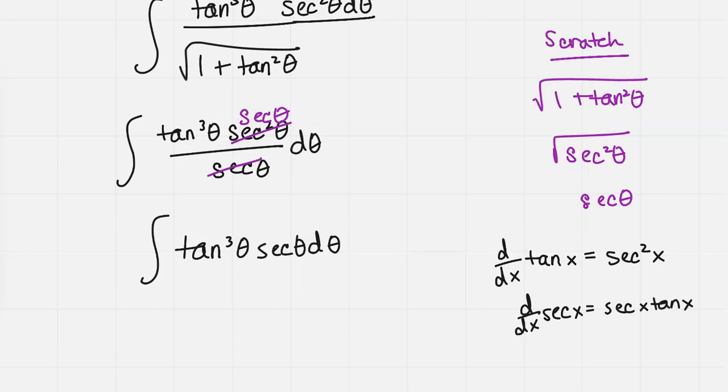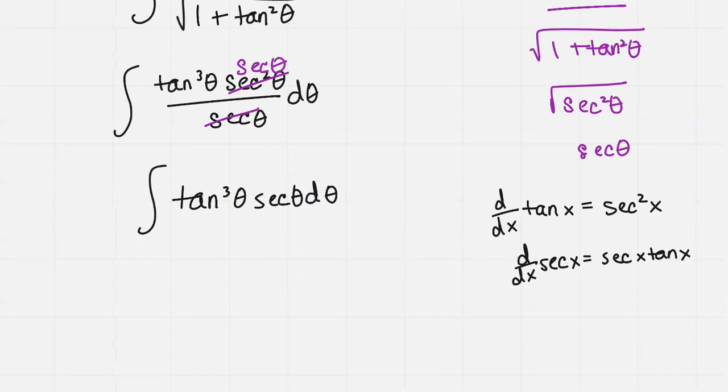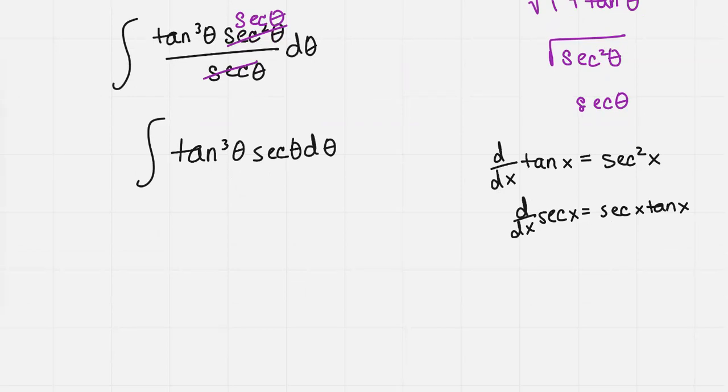When I originally played around with this, I thought, let's get something with a secant squared x and see where we can go. So that tan cubed x, I can separate out into tan squared x times tan theta, and then I still have that secant theta d theta all in the integral.